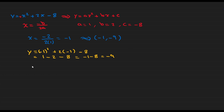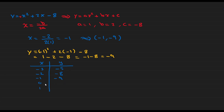Using the same technique, construct a table centered at the vertex (-1, -9), choosing two points on each side: x = -2, -3 on the left and x = 0, 1 on the right. By calculation: where x = -2, y = -8; where x = -3, y = -5. By symmetry: where x = 0, y = -8; and where x = 1, y = -5.